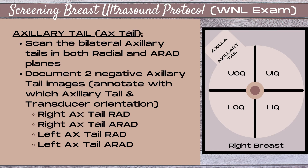Moving on to the next section of our screening breast ultrasound protocol for our normal exam: the axillary tail. This is the normal extension of breast tissue that extends up into the axilla and is connected to the upper outer quadrant of the breast. I will most commonly document this area while scanning the upper outer quadrant since I'm already in that region. This is a very crucial area to evaluate because it's not uncommon for a breast cancer or mass to hide within this tissue. You want to scan both axillary tails bilaterally in the radial and antiradial planes.